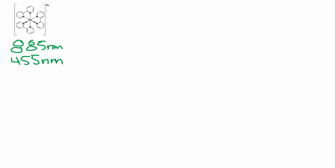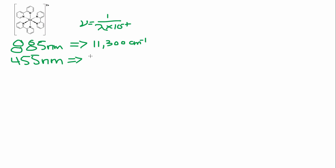The easiest energy unit to use is the wavenumber. To convert, we use the equation: wavenumber = 1 / (wavelength × 10⁻⁷). Plugging in 885 nm gives 11,300 cm⁻¹, and the 455 nm absorption comes in at 22,000 cm⁻¹.